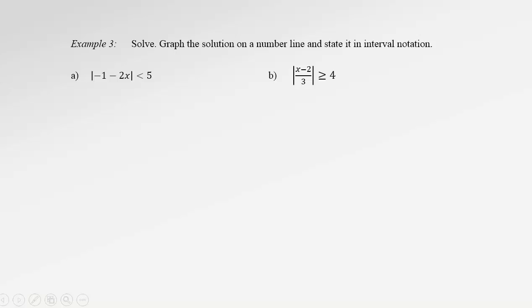Let's see particular examples — we need to solve the inequalities, graph the solution set on a number line, and state the answer in interval notation. The first inequality follows the first pattern: we have the absolute value of something that is smaller than 5, meaning our expression is enclosed by negative 5 and 5 — it is the inside region. We write negative 5 is less than the expression, which is less than 5.